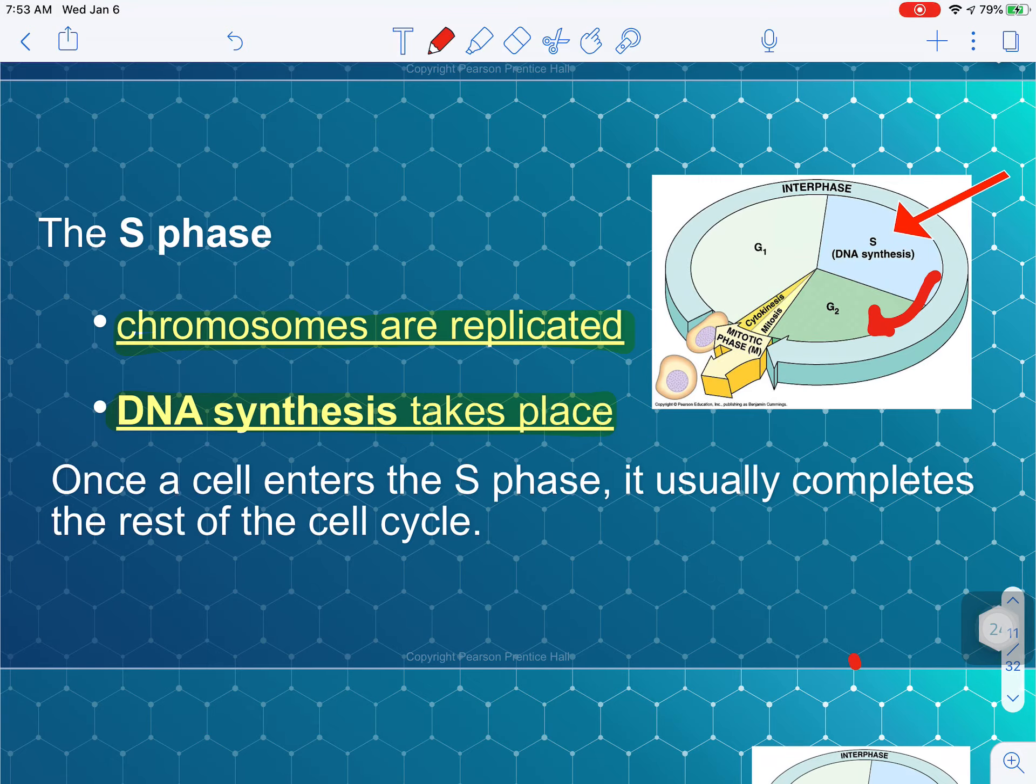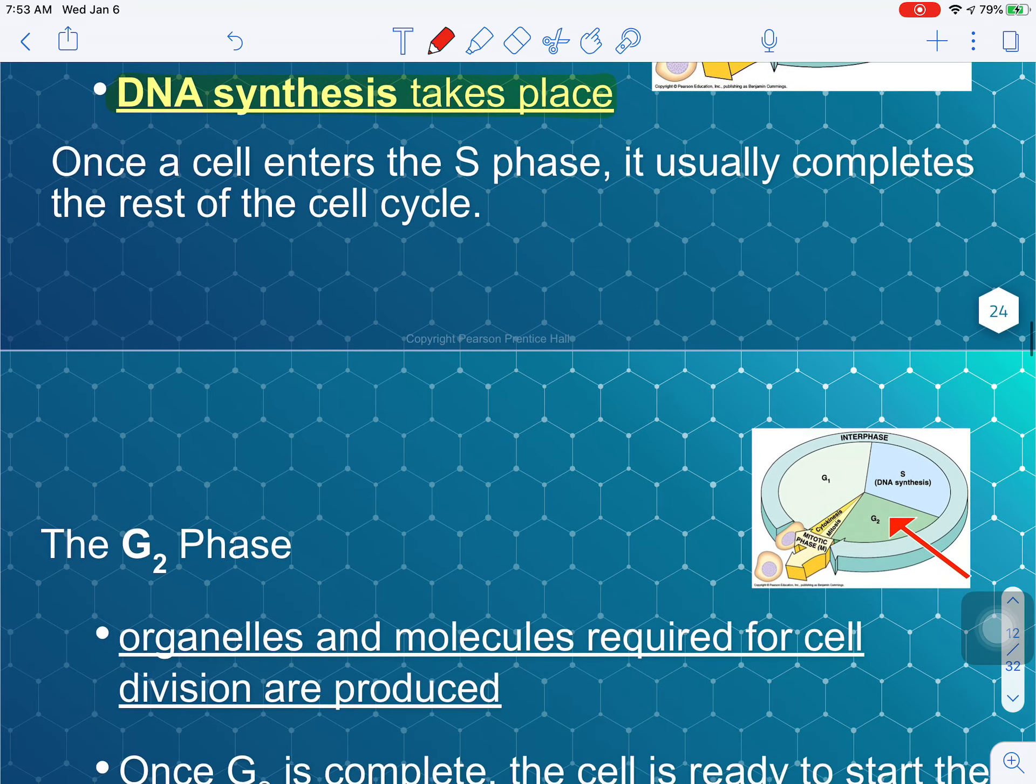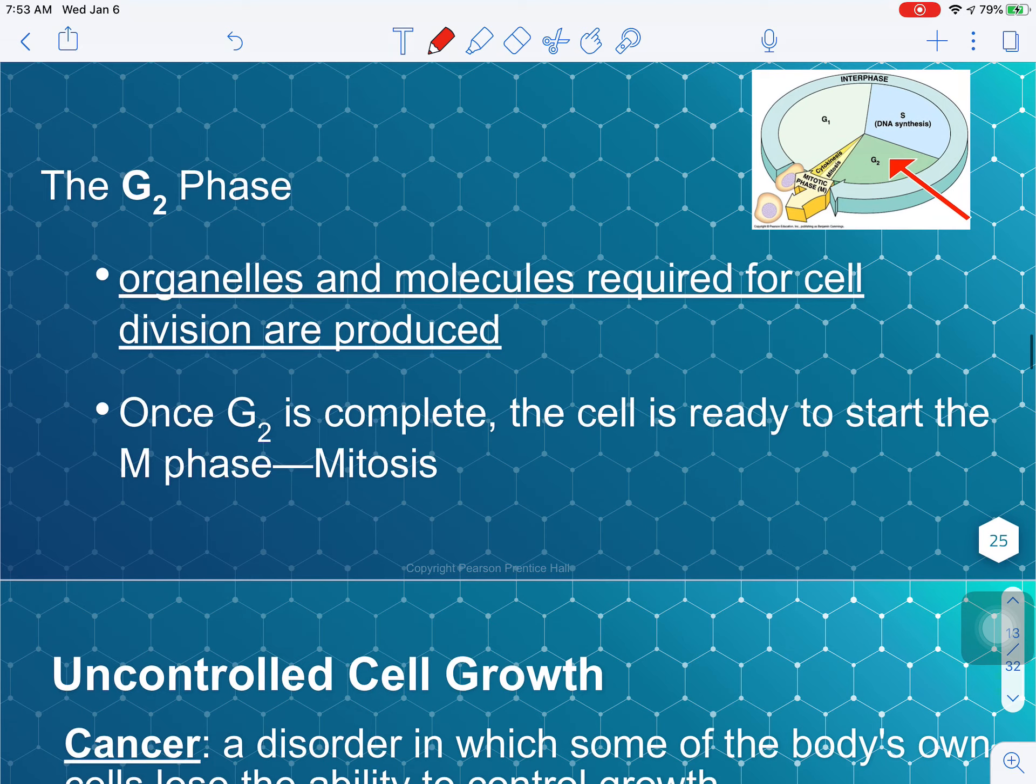So moving on, once the DNA synthesis has taken place, the cell moves into G2 phase, where more molecules and organelles required for cell division are going to be produced. So that's that extra growth in order to make sure that the cell is ready for division. It has two copies of everything, all the cell structures, and once it is complete, the cell is ready to start mitosis or the M phase.